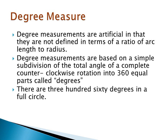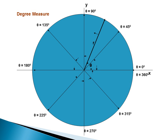Degree measurements are artificial in that they are not defined in terms of a ratio of arc length to radius. They are based on a simple subdivision — humans created 360 degrees and it was entirely arbitrary. You can see that 90 degrees corresponds to pi over 2 radians, 180 degrees corresponds to pi radians, and 270 degrees corresponds to 3 halves pi radians.